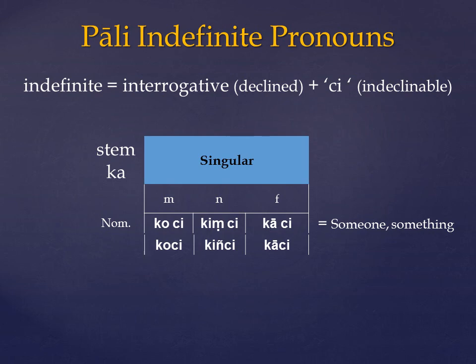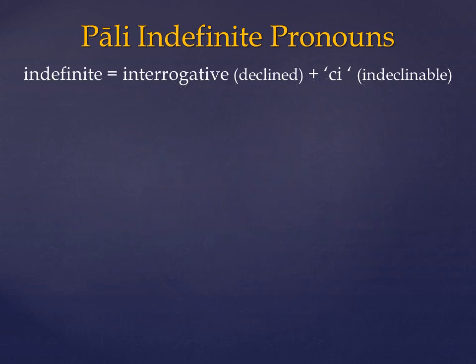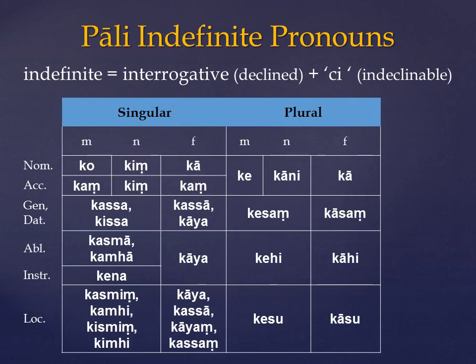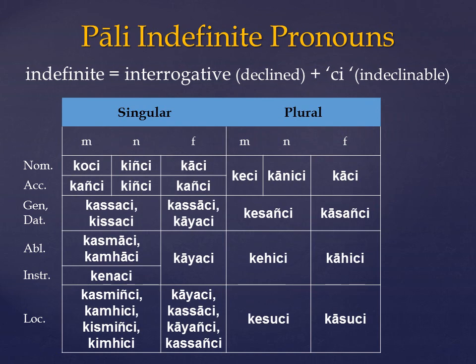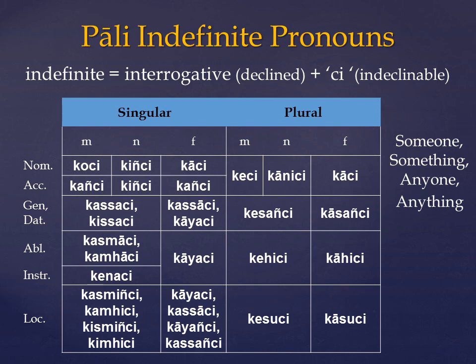So let's remind ourselves of how the interrogative pronoun declines. Pronouns can represent substantive nouns, in which case they will stand alone and take the gender and number of the thing that they represent — the antecedent. Or they can act as pronominal adjectives, in which case they will qualify another noun and take the same gender, case and number as the noun that they qualify. This is still true when the thing that they represent is indefinite. We can tell that the pronoun is indefinite because it always ends with the particle CI, and in English we can render this with the indefinite pronouns someone, something, anyone or anything, depending on what best fits the context.